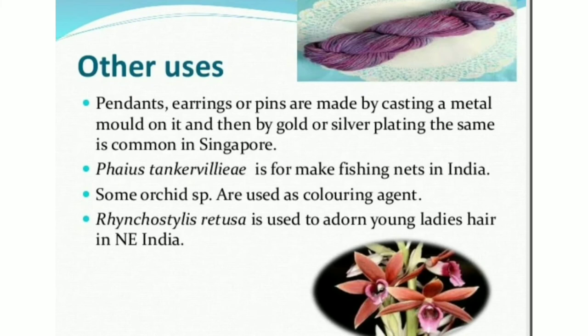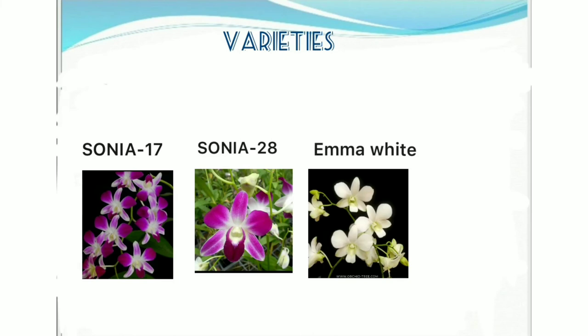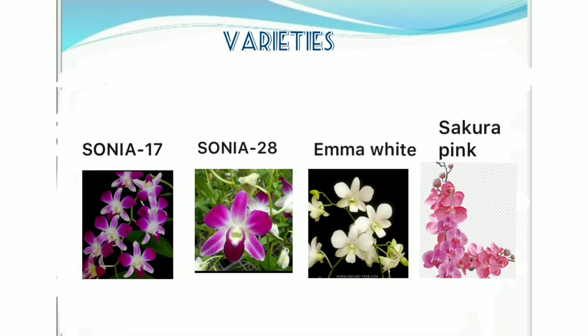Other uses: Pendants, earrings or pins are made by casting a metal mold on orchids and then gold or silver plating them; this is common in Singapore. Phaius tankervilleae is used for making fishing nets in India. Some orchid species are used as a coloring agent. Rhynchostylis retusa is used to adorn young ladies' hair in north-eastern India. Some popular varieties are Sonia 17, Sonia 28, Emma White, and Sakura Pink.